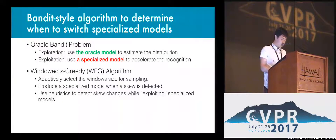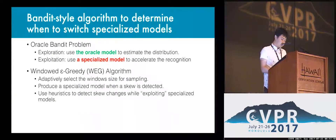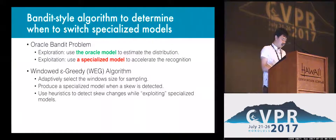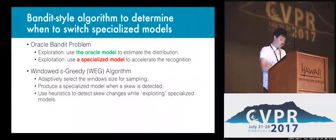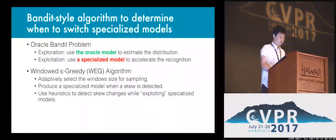When should we switch between the Oracle and the specialized model at runtime? We formulated this problem as a non-stationary contextual bandit problem with many arms. Basically, we explore the distribution by running the Oracle, and exploit it by running the specialized model for that distribution. We use WinnowLink to handle non-stationarity, and heuristics to detect abrupt distribution changes.